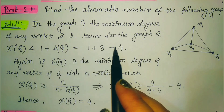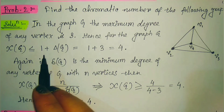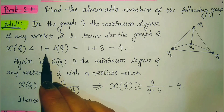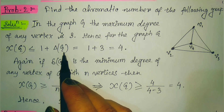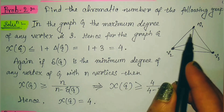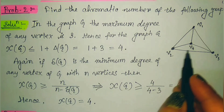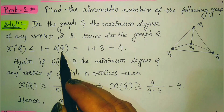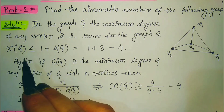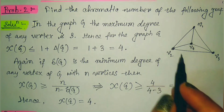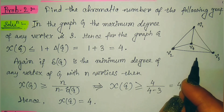From the theorem that the chromatic number is always less than or equal to 1 plus the maximum degree, and since the maximum degree Δ(G) equals 3, the chromatic number is at most 4. The minimum degree δ(G) is also 3.